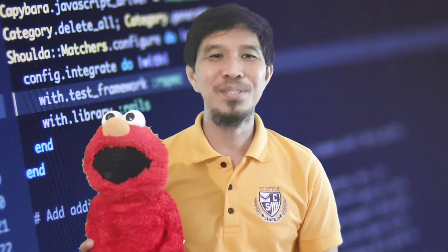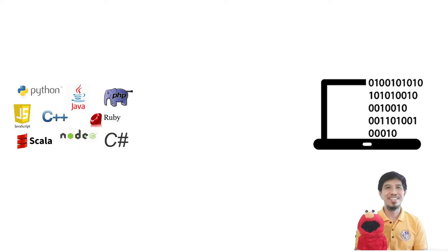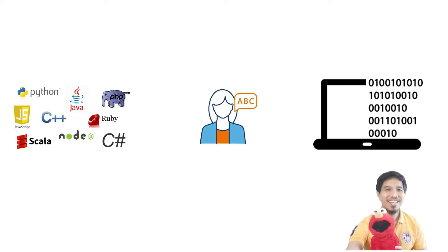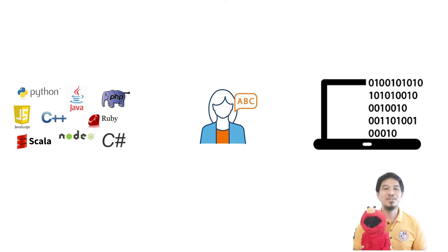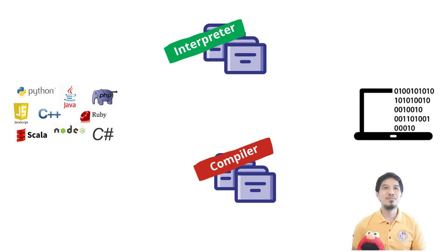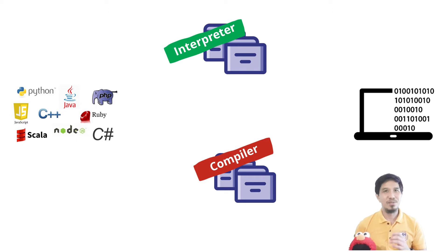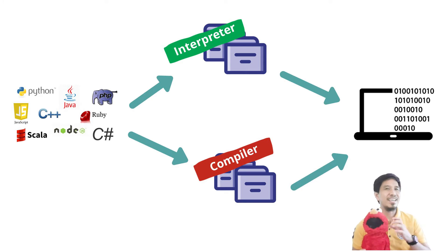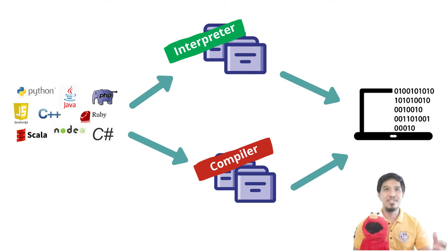Welcome back with Elmo. We just learned what programming is — it's a set of instructions that we give to a translator. This translator can be an interpreter or compiler. We give these files that we create, our source code, to these translators, and they allow us to give instructions to machines, to computers, to phones.